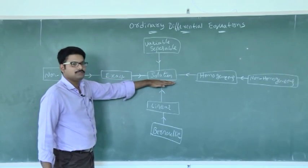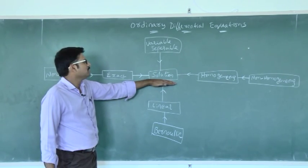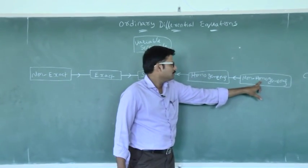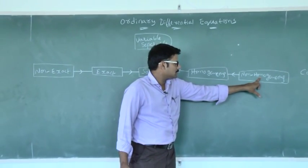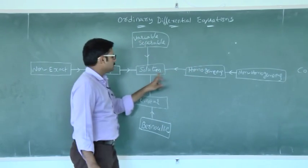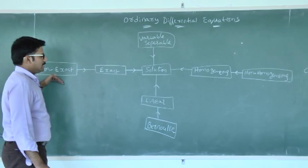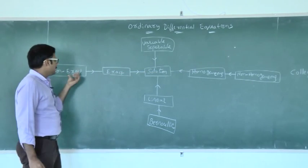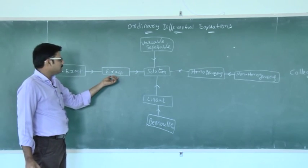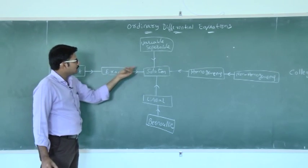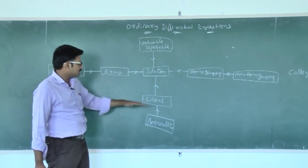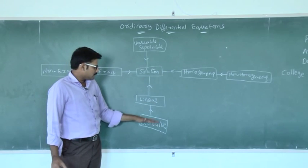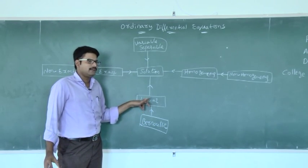Our basic aim is to attain a solution. We can attain a solution by the variable separable method, homogeneous method, or non-homogeneous — where we reduce the non-homogeneous type to homogeneous type and then find a solution. For exact equations, we use the direct procedure; for non-exact, we multiply by an integrating factor to make it exact. For a linear equation, we use the standard formula, and for a Bernoulli equation, we reduce it to the linear form and then attain a solution.